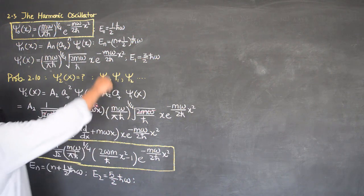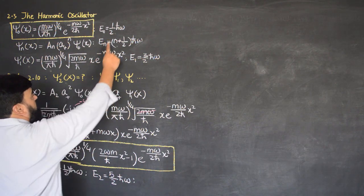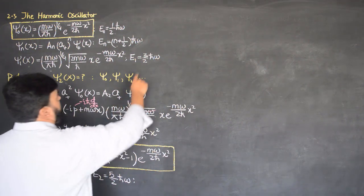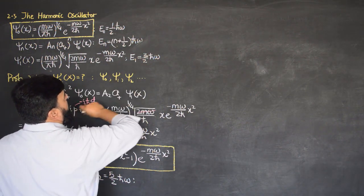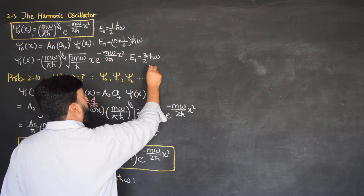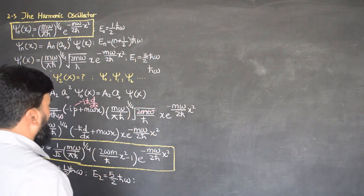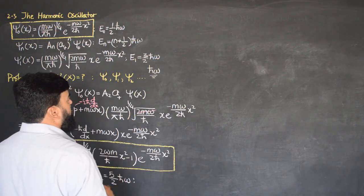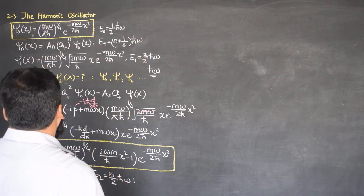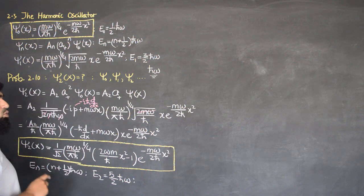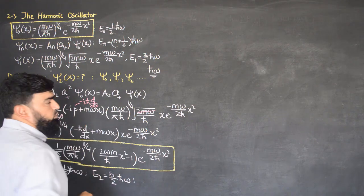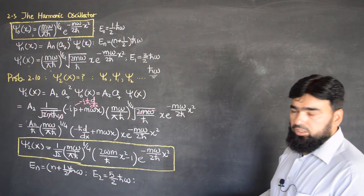We can observe that the ground state has energy 1/2 ℏω and the first excited state has 3/2 ℏω. Subtracting, there is a difference of exactly ℏω between successive levels. We have already seen that each state differs by ℏω — this is the jump size between the levels — which means the energy levels of the harmonic oscillator are quantized, not continuous.